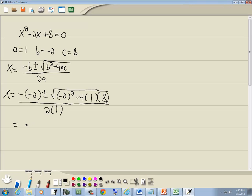Well negative negative gives us a positive 2 plus or minus square root. Negative 2 squared is 4 minus 4 times 1 is 4 times 8 is 32, all over 2. Which gives us 2 plus or minus square root. 4 minus 32 is negative 28 over 2.